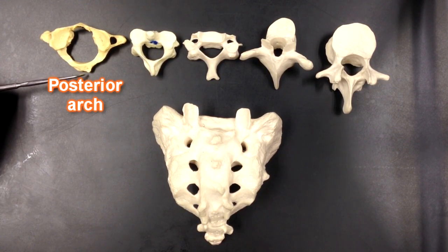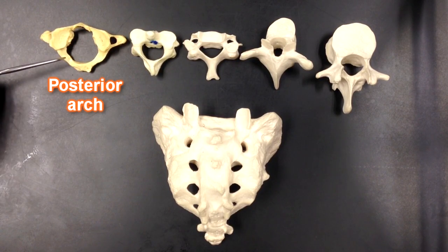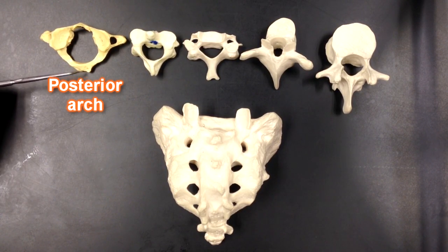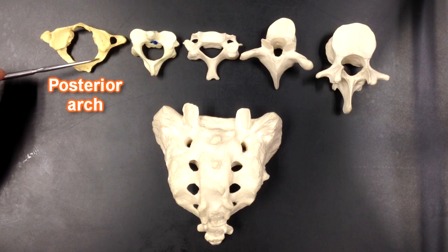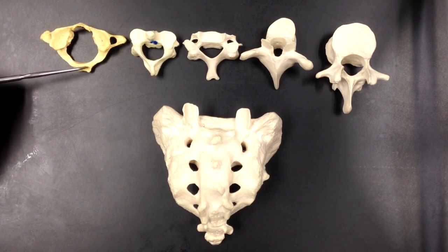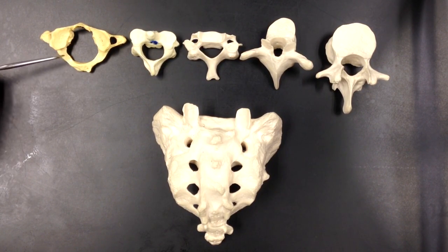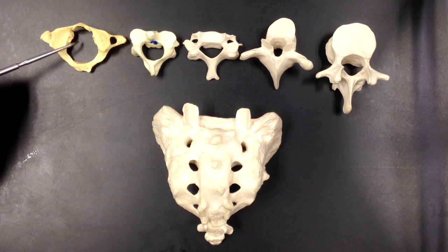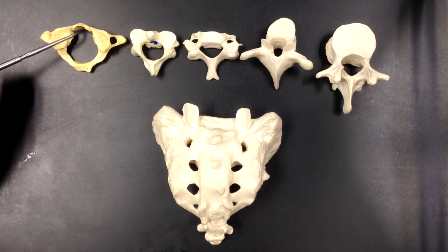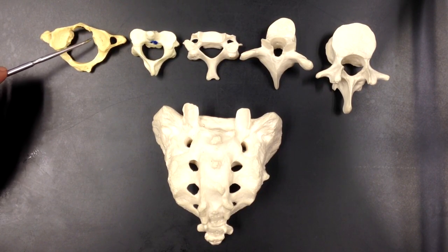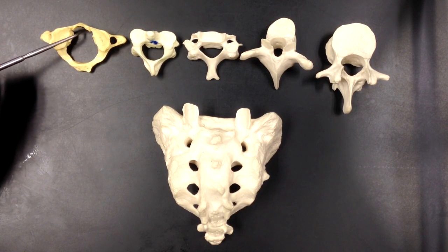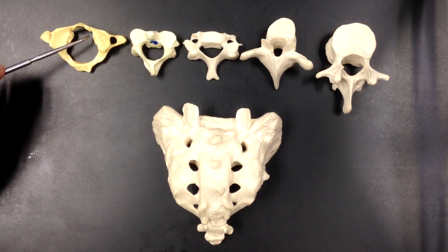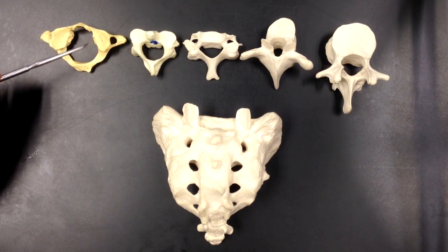This happens to be the posterior arch of atlas. If this were a spinous process, these would be lamina. However, we do not have a spinous process — we have this posterior tubercle on the posterior arch of atlas. Notice in this area, we have a space. Normally in all the other vertebrae, we would have a massive bone here called the body. The body is missing in the atlas.